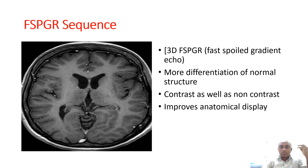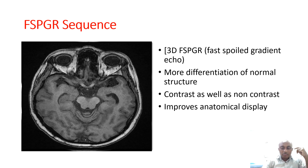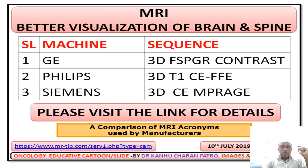FSPGR sequence is called fast spoiled gradient echo, 3D FSPGR — you can generate it in 3D format. It provides better differentiation of normal structures. Contrast as well as non-contrast improves the anatomical display. In FSPGR sequence, you can clearly see structures like the optic chiasm that are not well seen on usual MRI. On a GE machine it is called FSPGR, on Philips it is called CE-FFE, and on Siemens it is called VIBE sequence.